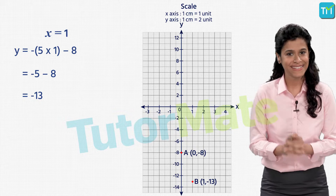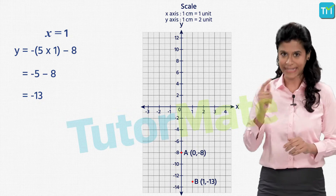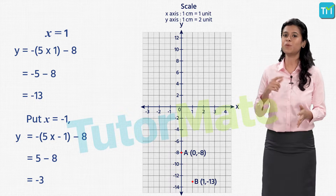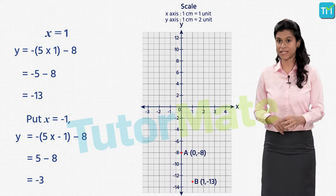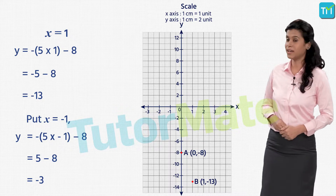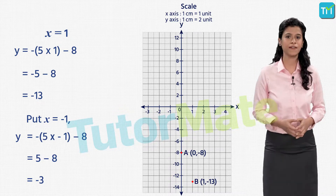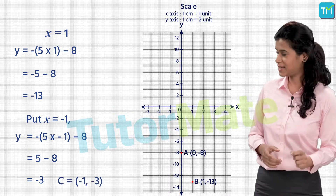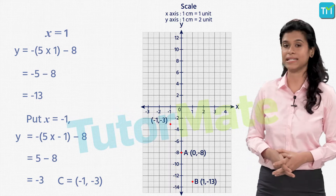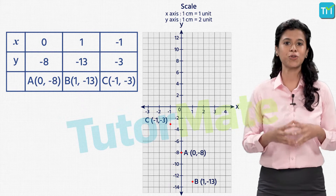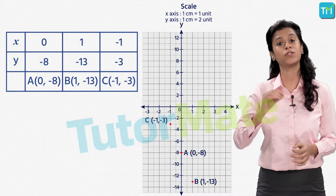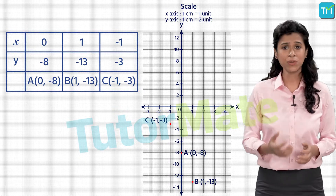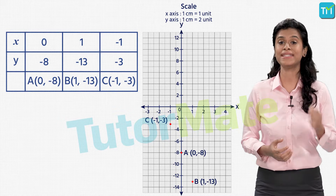Now let's take a negative value for x, keeping it simple with x equal to minus 1. Substituting, we get y is equal to minus 5 into minus 1 minus 8, which gives us 5 minus 8, that is minus 3. Let's plot the point minus 1 comma minus 3 and call it C. This table shows the values of x and corresponding y values that form the solutions, and how they are used to plot points A, B and C.